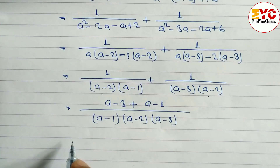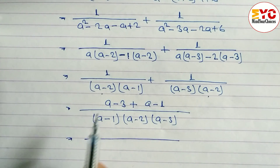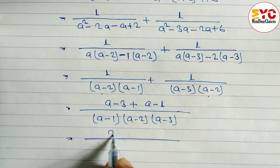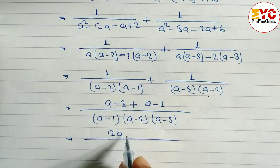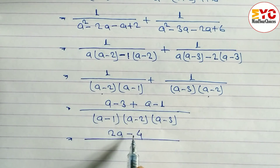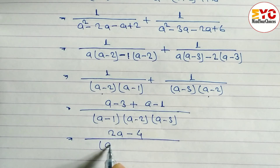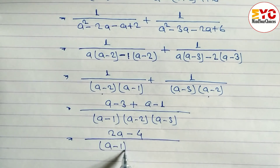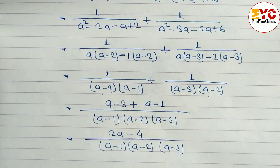Now we add and subtract like terms in the numerator. We have (a-3) + (a-1). Adding: a+a gives 2a, and -3-1 gives -4. So the numerator becomes 2a-4, over the denominator (a-1)(a-2)(a-3).